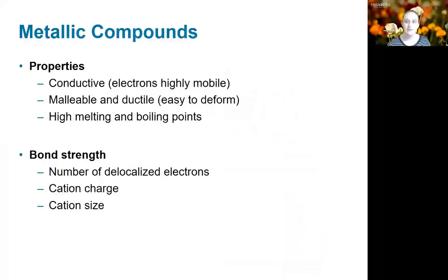Some of the properties of metallic compounds are really directly related to metallic bonds in that they're conductive. It's very easy to move electrons around, therefore it's very easy to move charge and heat through metals. They're very easy to deform. If you squish them or pull on them, the electron sea basically compensates for any change in structure. And as with ionic compounds, they tend to have very high melting and boiling points.